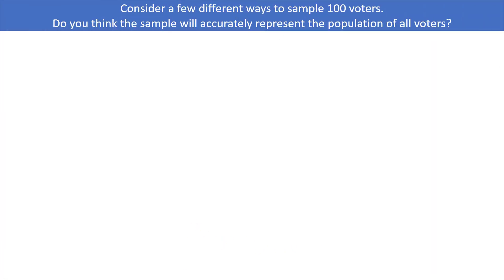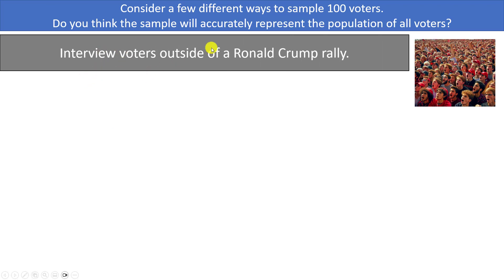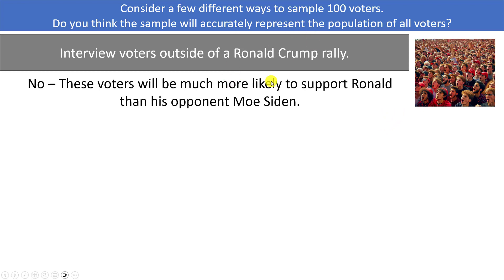Let's consider a few different ways we could sample 100 voters and think about whether each sample accurately represents the population. Method number one: we could interview voters outside a Ronald Crump rally. We'd just go outside the rally, grab 100 people, and ask who they're supporting. Clearly there's going to be an issue — they're going to be much more likely to support Ronald Crump than his opponent, Moe Seiden. We're not going to get the same percentage in our sample as in the entire population.